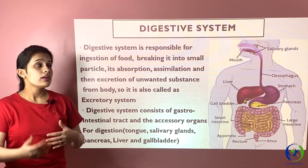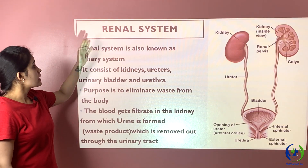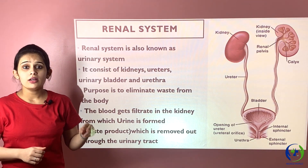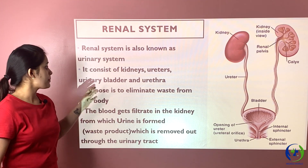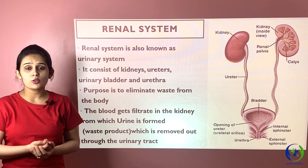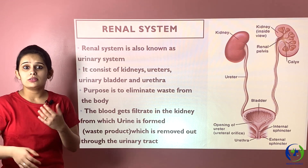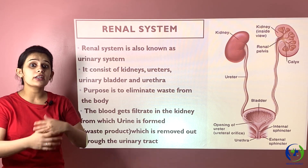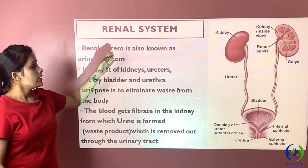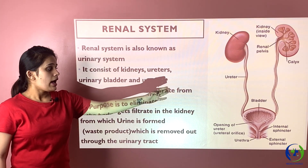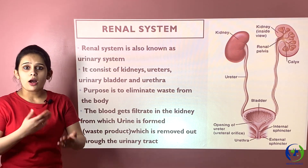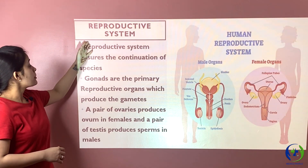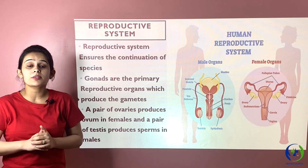The next system is the renal system, which includes a pair of kidneys, a pair of ureters, the urinary bladder, and the urethra. The blood is purified in the kidneys — waste material from the blood is filtered there and urine is formed. Urine is essentially the waste material filtered out from the blood. This urine is transported through the ureters into the bladder, and from there it is excreted out through the urethra. The renal system is also called the urinary system.